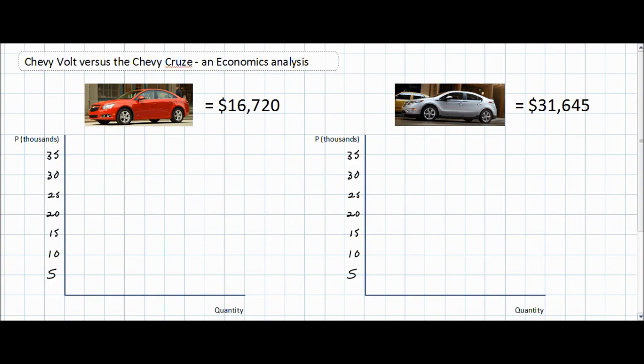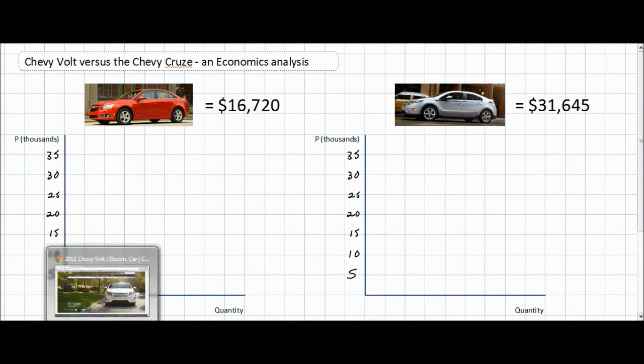Now the markets we're going to be looking at in today's podcast are those for two particular cars from General Motors. One car is called the Chevy Cruze and it retails at $16,720. The other car is called the Chevy Volt and it goes for $31,645. Let's take a look at these two cars before we begin our economic analysis.